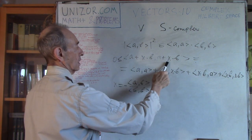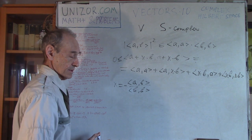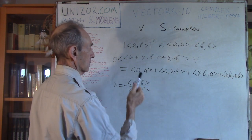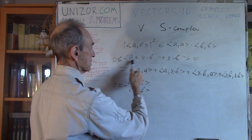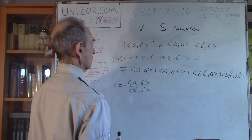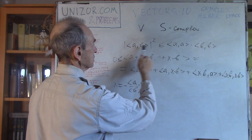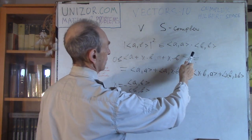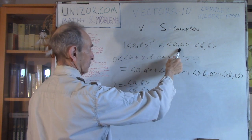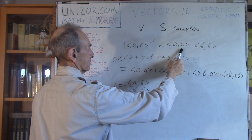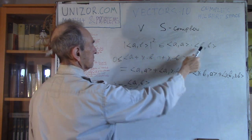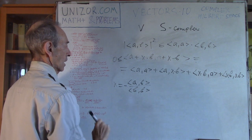If B equals zero, the inequality is trivial: the left side ⟨A,A⟩ is non-negative by the axiom, and the right side is zero times zero, making it obvious. So we only need to handle the case where B is not zero, and we substitute x = -⟨A,B⟩ / ⟨B,B⟩ into the expanded inequality.